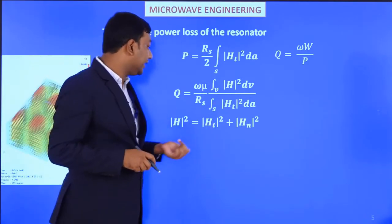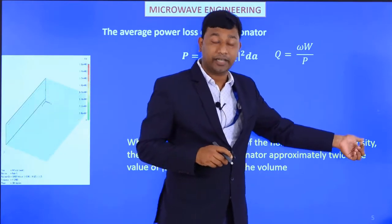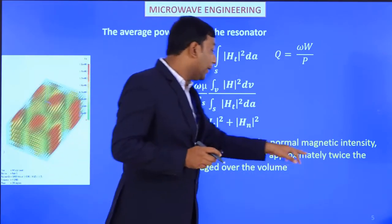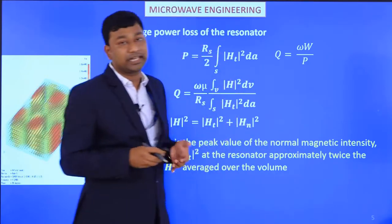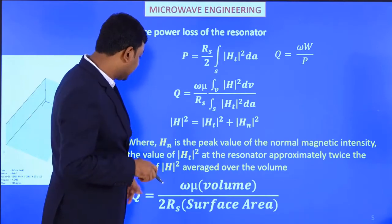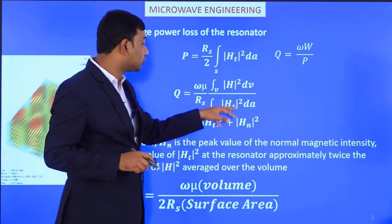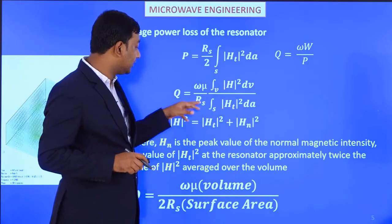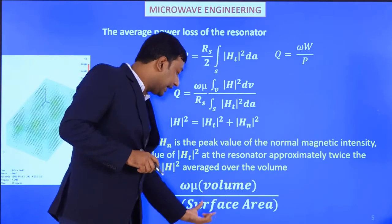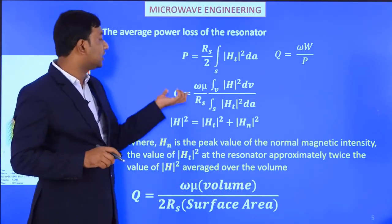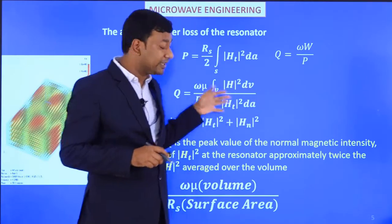We can write H squared equals H_t (tangential component) plus H_n (normal component) squared, where H_n is the peak value of the normal magnetic intensity. For a particular resonator, H_t squared is approximately twice the value of H squared over the volume. For a rectangular cavity resonator, placing these values gives the approximate quality factor equation as Q ≈ ωμ · (volume integral) / (R_s · surface integral), which is the quality factor for rectangular or circular cavity resonators.